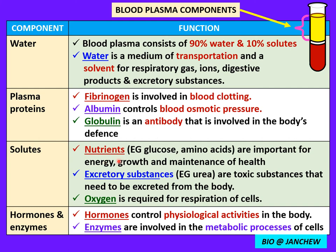Other solutes include nutrients such as glucose and amino acids that are transported from the small intestine to the body cells, providing energy and aiding cell growth. Vitamins are transported and needed for the maintenance of health. There are also excretory substances like urea — toxic substances that need to be excreted. Urea is produced in the liver from excess amino acids and must be transported by the blood to the kidneys to be excreted in the urine.